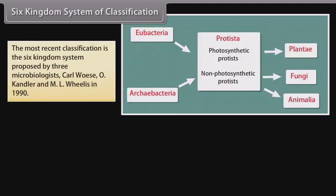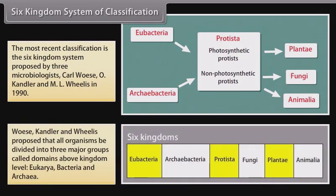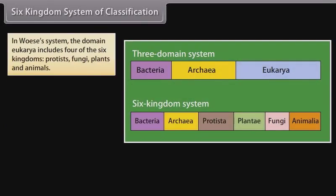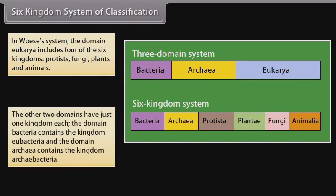Six Kingdom System of Classification: The most recent classification is the Six Kingdom System proposed by three microbiologists — Carl Woese, O. Kandler, and Emil Willis in 1990. They proposed that all organisms be divided into three major groups called domains above kingdom level: Eukarya, Bacteria, and Archaea. In this system, the domain Eukarya includes four of the six kingdoms: Protists, Fungi, Plants, and Animals. The other two domains have just one kingdom each — the domain Bacteria contains the kingdom Eubacteria, and the domain Archaea contains the kingdom Archaebacteria.